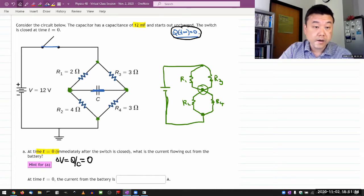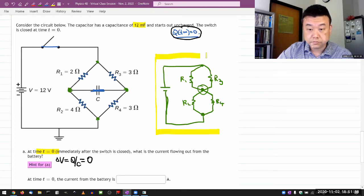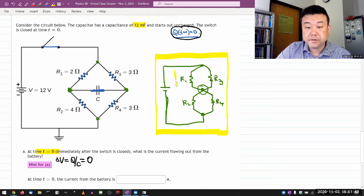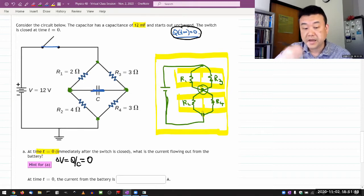So once you have redrawn your circuit into this form, you don't even have to use Kirchhoff's rules. You can simplify these two resistors as parallel, simplify these as parallel, then you have two equivalent resistors that are in series, add them up.